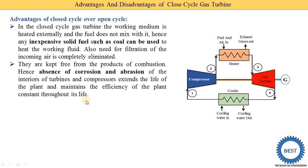In an open cycle, the combustion product is supplied directly into the turbine, so there are chances of corrosion and abrasion on the turbine blades. But in a closed cycle, we are not supplying the products of combustion into the gas turbine. Hence, the absence of corrosion and abrasion extends the life of the plant, maintains efficiency constant throughout its life, and reduces maintenance requirements.